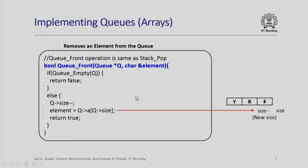How do we remove the front element from the queue? The queue front operation is actually same as stack pop operation. If the queue is empty of course nothing is done, but if queue is not empty all that I do is I reduce the size of the operational array by 1 by putting size minus minus and the element which is at the front which is pointed to originally by size is now returned as the element. Very simple operation: now the effective size of the array is reduced to only 2 and F has been returned back.